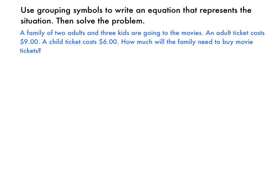Use grouping symbols to write an equation that represents the situation, then solve the problem. A family of two adults and three kids are going to the movies. An adult ticket costs $9. Child ticket costs $6. How much will the family need to buy movie tickets?